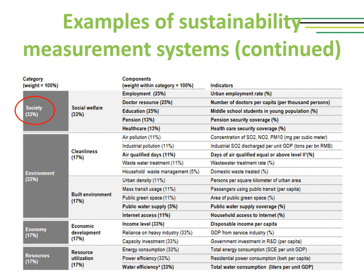Please take a look at the table on the slide that portrays the dimensions and indicators used under this system from China. You can see that the society dimension is 33% of the entire score, and under social welfare we have issues such as employment, doctor resources, education, pension, and healthcare.